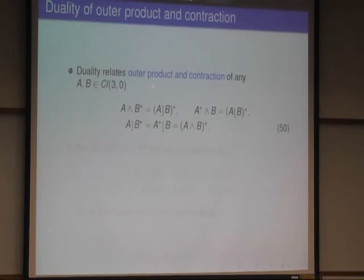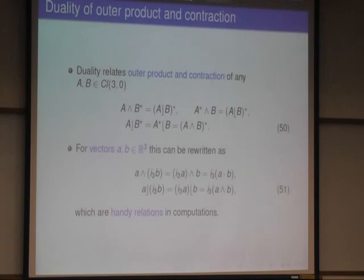Now, duality also relates outer product and contraction, because if I take the outer product of a blade A with another blade B, but with its dual, then it's the same like taking the contraction of A with B and dualizing it. And similarly here, I get this relationship. So I can relate with the help of the duality the outer product and the contraction. And here this is written for vectors A and B.